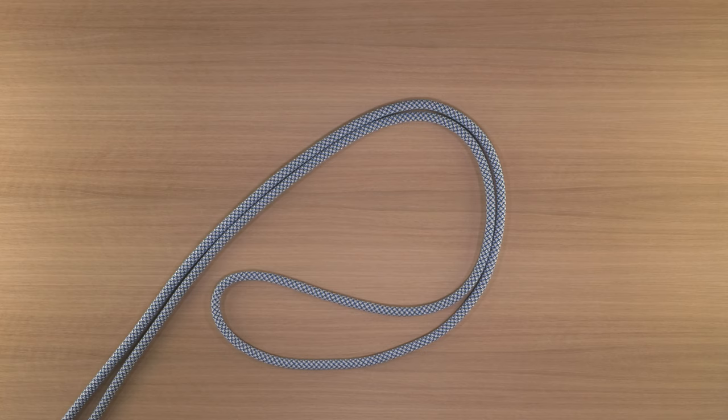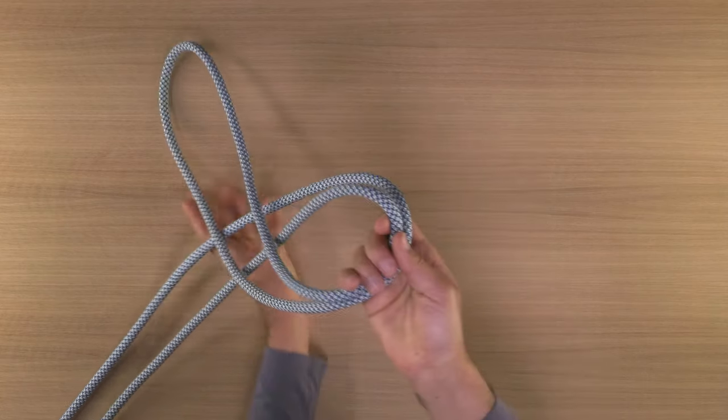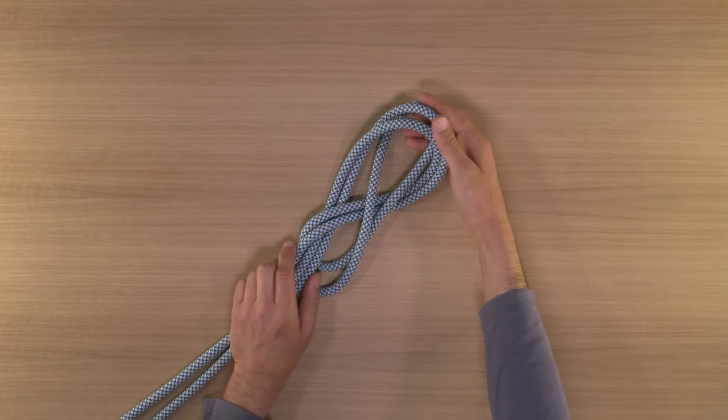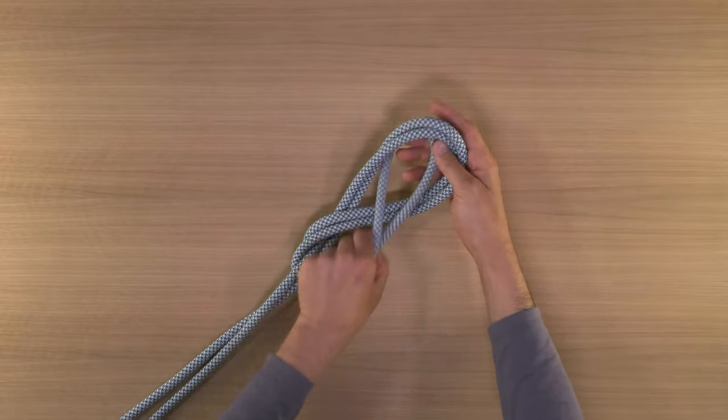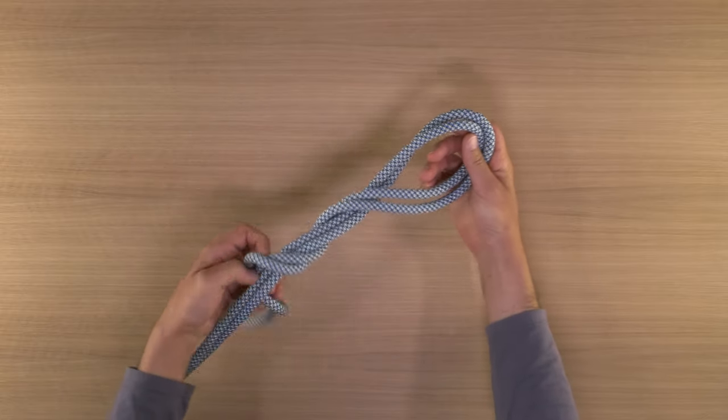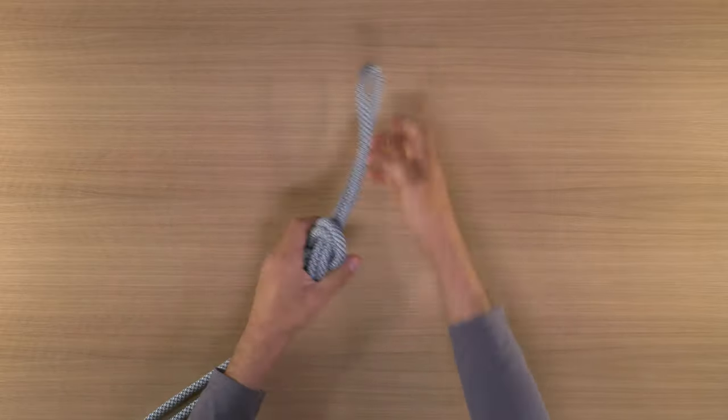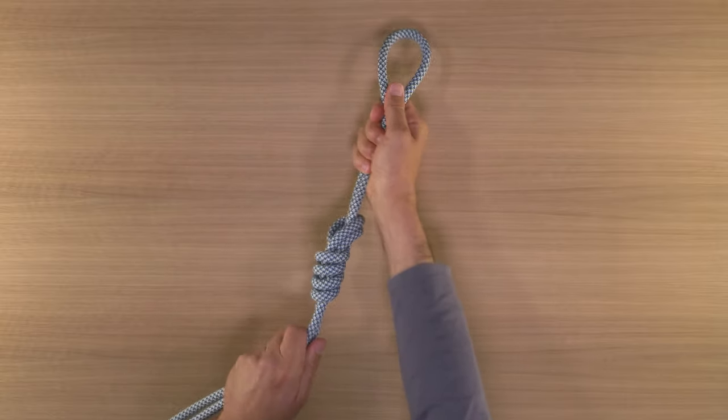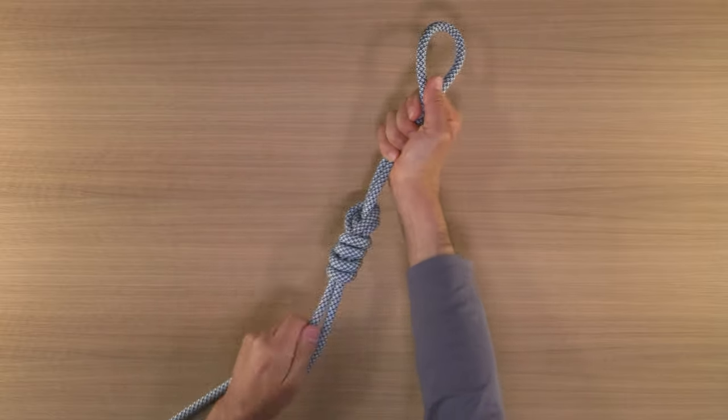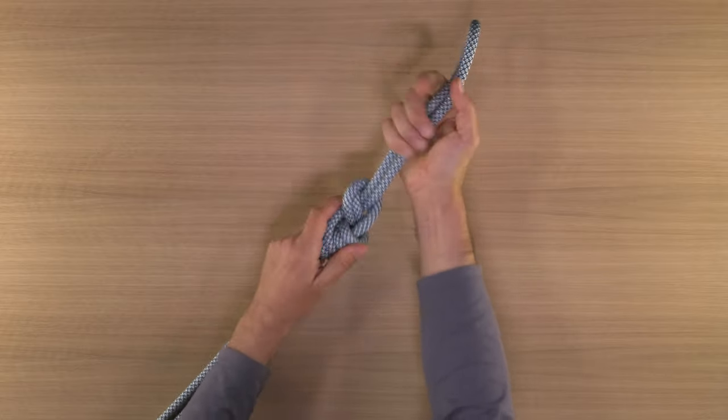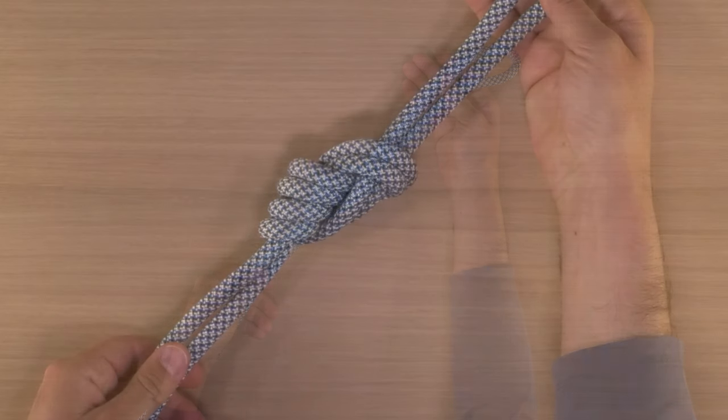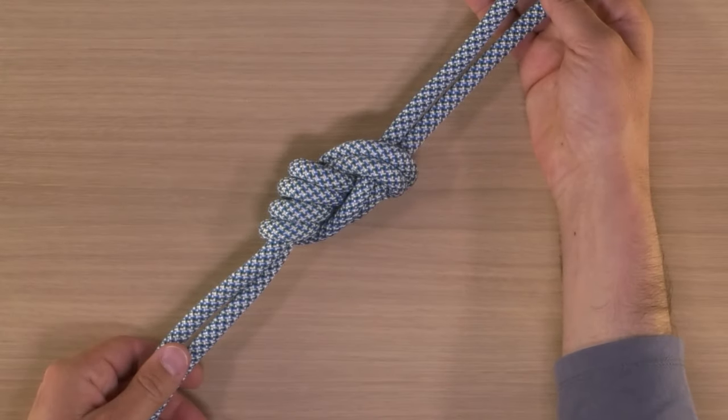You can tie what some people would call a figure nine, figure ten, figure eleven, just a figure eight knot with additional wraps. So instead of making that figure eight, you just take the end of your bight more times, as many more times as you want, around the base of the knot. These additional wraps eat up material, if you're trying to make your master point a little higher, that's nice. The more wraps you add, generally the easier this knot is going to be to untie if you've dressed it neatly.